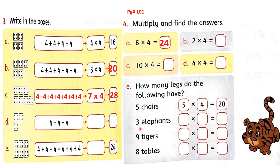Next question — how many legs do 3 elephants have? First, number of elephants — write number of groups: 3. Each elephant has how many legs? Yes, 1 elephant has 4 legs. Read the table: 3 fours are, or 4 threes are — the answer we get is 12. So 3 elephants have 12 legs. Next 2 questions you will solve yourself.